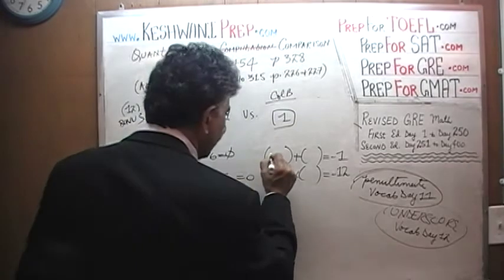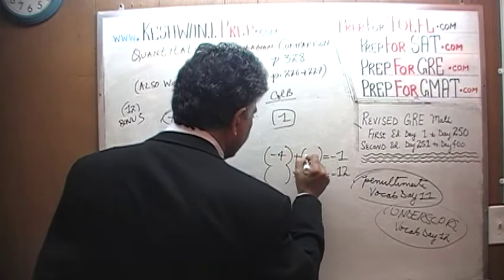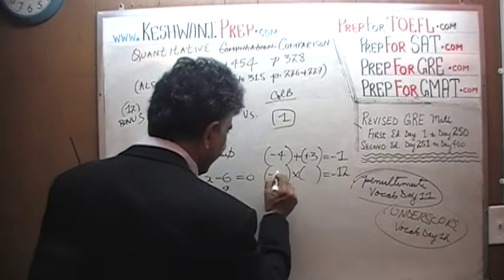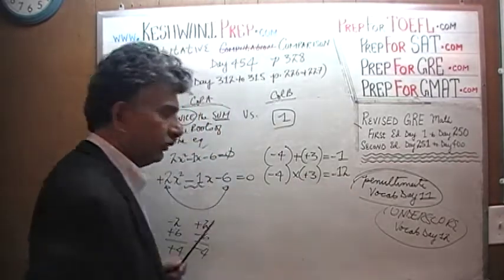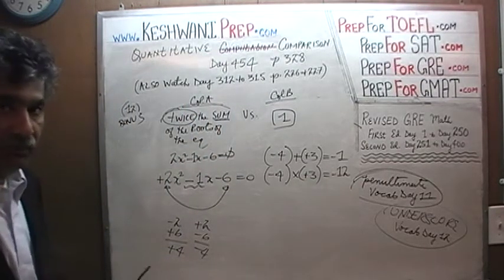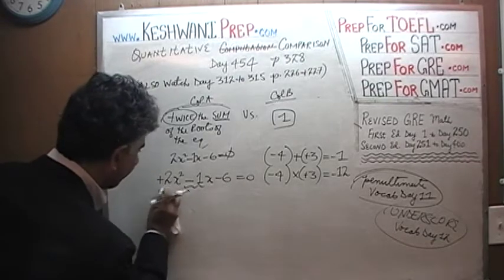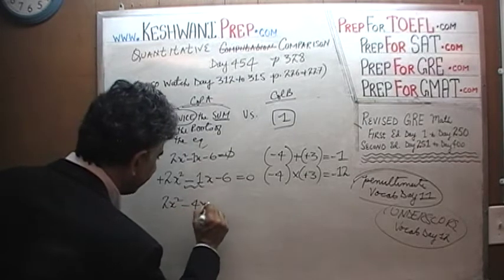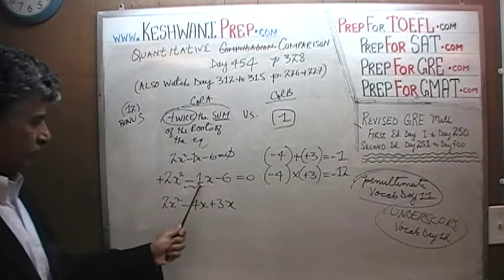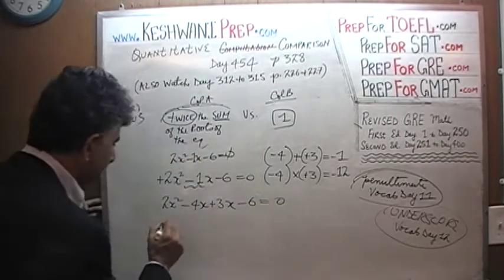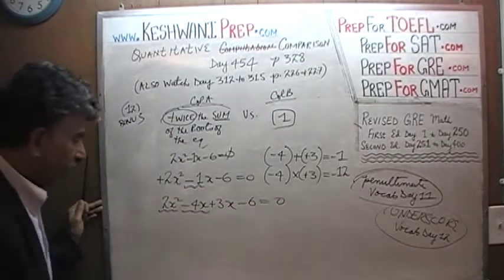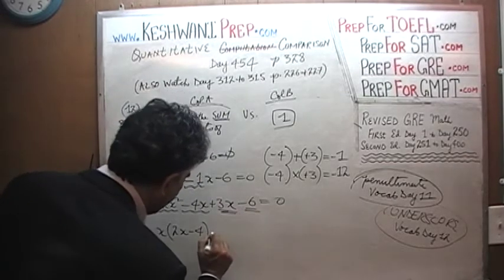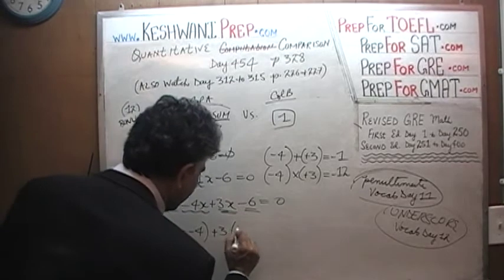Those two numbers are negative 4 and positive 3. Negative 4 plus positive 3 is negative 1, and negative 4 times positive 3 is negative 12. Now we write 2x squared minus 1x minus 6 as 2x squared minus 4x plus 3x minus 6 equals zero. The first two terms, 2x squared and negative 4x, have a common factor of 2x, leaving 2x times (x minus 2).